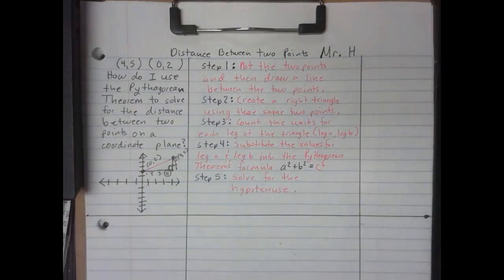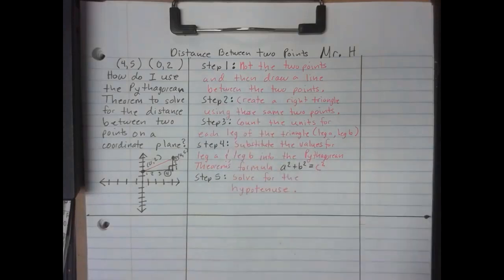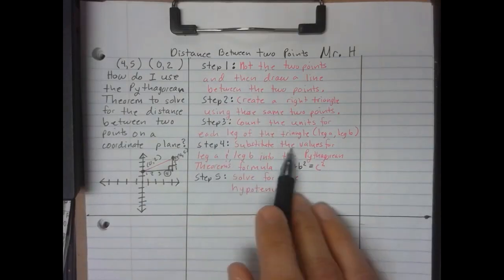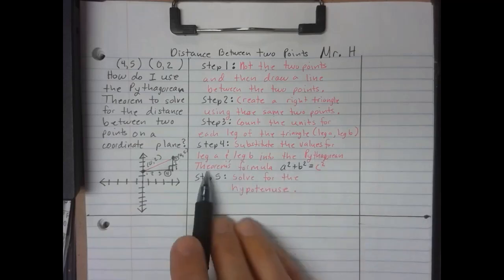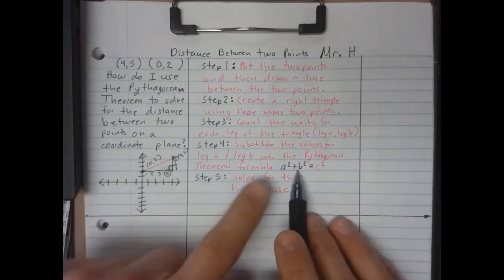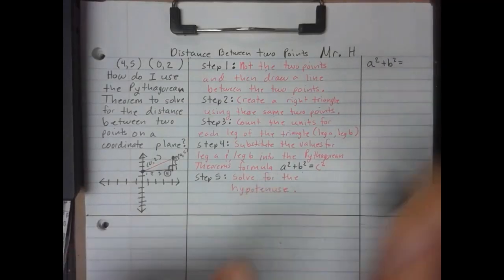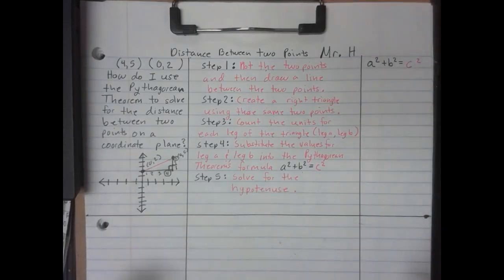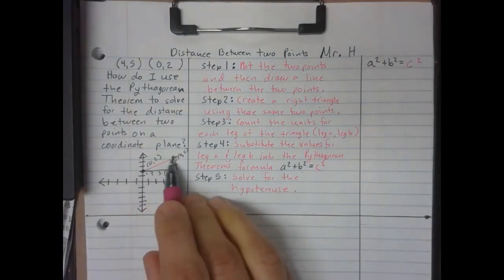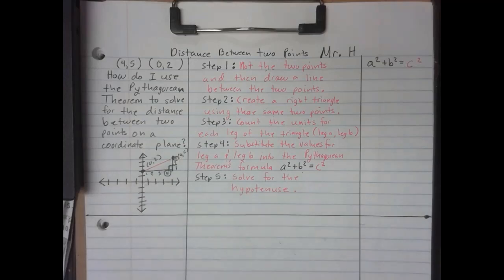Step four: substitute the values for leg a and leg b into the Pythagorean theorem formula. I'm going to rewrite the formula up here where I'll do the work: a² + b² = c². We're trying to find c, which is the distance between the two points. If you write down the steps and do the work, you get an easy hundred. Now following the notes, I'll go ahead and solve.